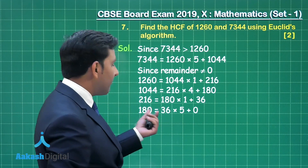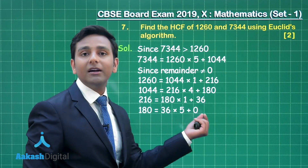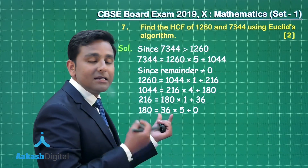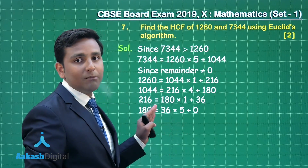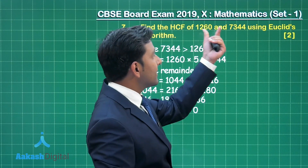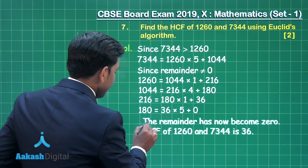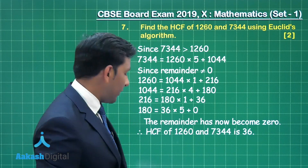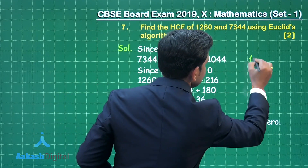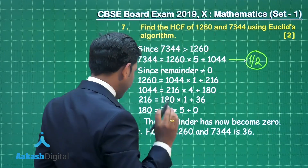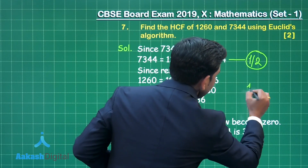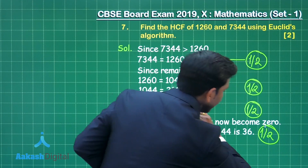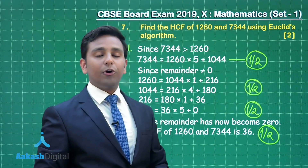Now dividing 180 by 36, we obtain quotient 5 and remainder equal to 0. This is the final step of the Euclid division algorithm. The divisor of this last step is the HCF of the two given numbers, so 36 is the HCF of 1260 and 7344. Each step of the algorithm earns half a mark, giving a total of 2 marks.